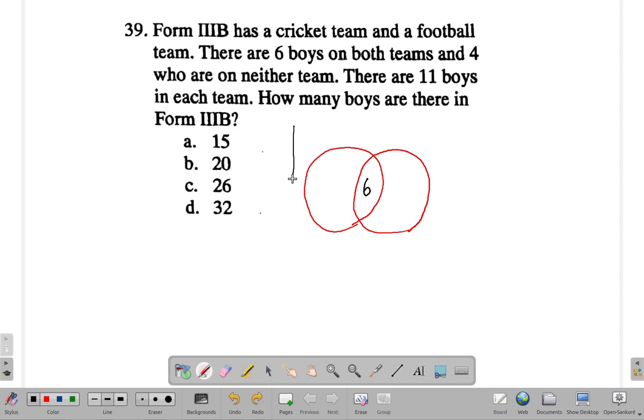Six on both teams. Four on neither. So, if I should draw my universal set, I have four outside here.